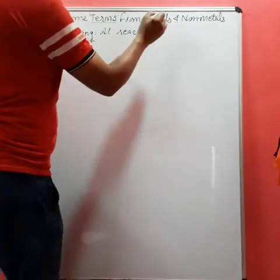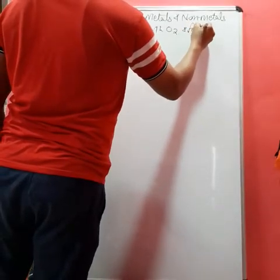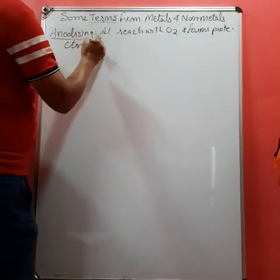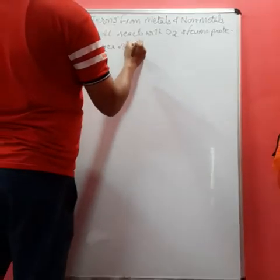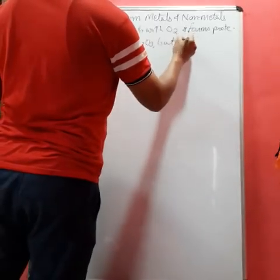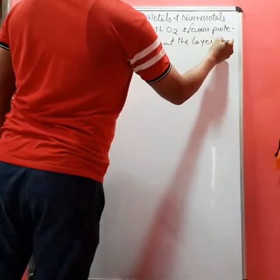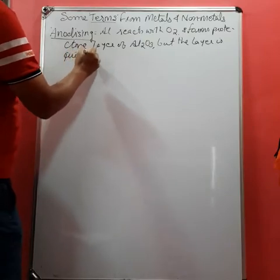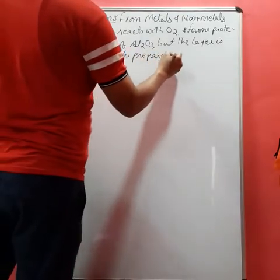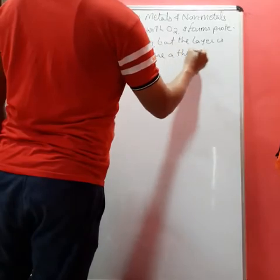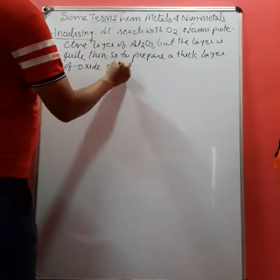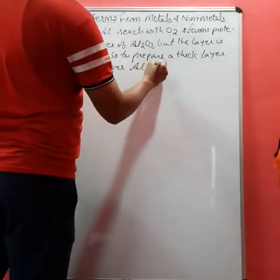It forms a protective layer of aluminum oxide, Al2O3. But the layer is quite thin, so to prepare a thick layer of oxide over the aluminum metal, anodizing process is applied.